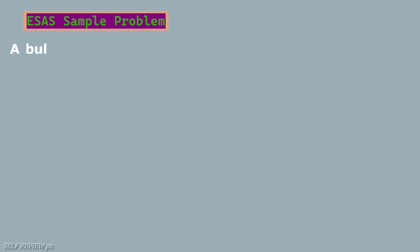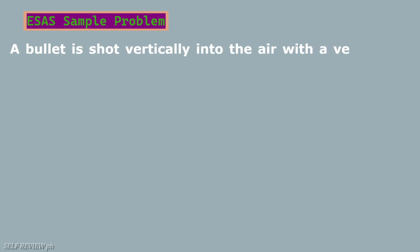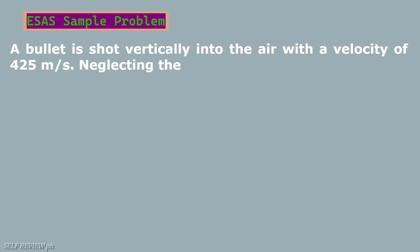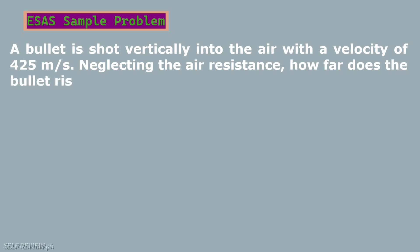Asus Sample Problem. A bullet is shot vertically into the air with a velocity of 425 meters per second, neglecting the air resistance. How far does the bullet rise?